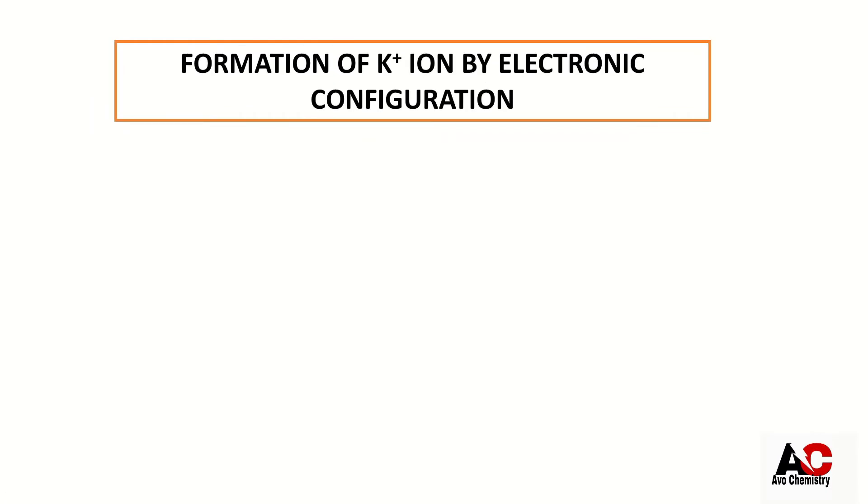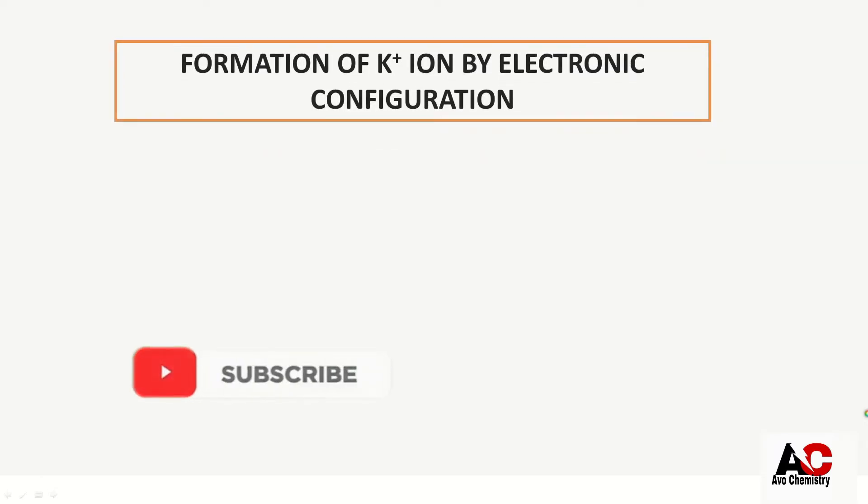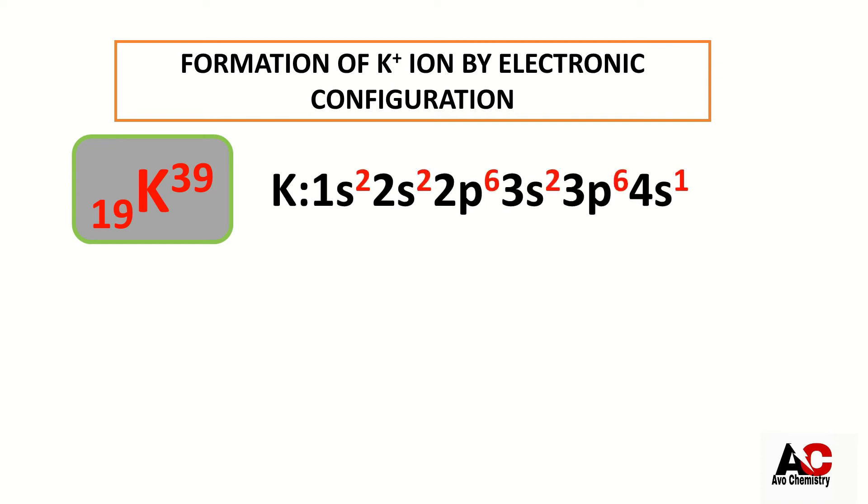Formation of potassium ion by electronic configuration. The atomic number of potassium is 19, so its electronic configuration is 1s2, 2s2, 2p6, 3s2, 3p6, and 4s1.